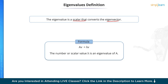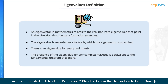The basic equation reads as Av = λv. The number or scalar value λ (lambda) is the eigenvalue of A. An eigenvector in mathematics relates to the real non-zero eigenvalues that point in the direction that the transformation stretches. The eigenvalue is regarded as the factor by which the eigenvector is stretched. There is an eigenvalue for every real matrix, and the presence of the eigenvalue for any complex matrices is equivalent to the fundamental theorem of algebra.